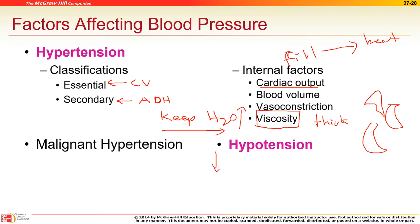For low blood pressure, medications aren't typically given until it's severe enough to cause fainting. Certain medications cause orthostatic hypotension — when you stand up, blood drains from the brain and the baroreceptors in the neck normally signal the heart to beat faster. But beta-blockers block that signal, so blood doesn't return to the head quickly. Train patients on these meds to get up very slowly.